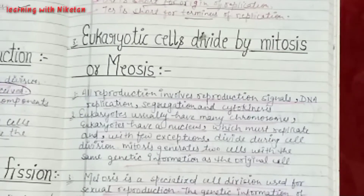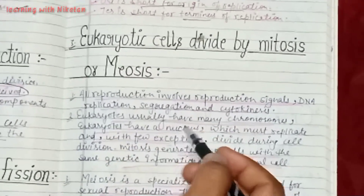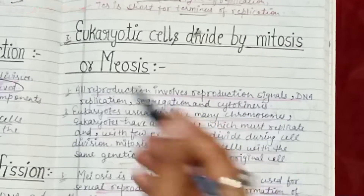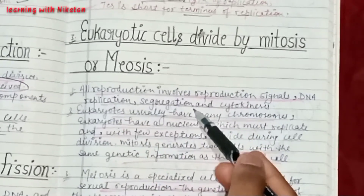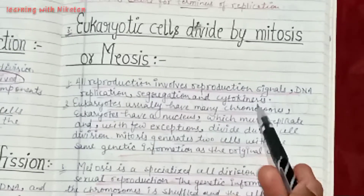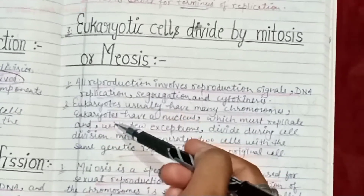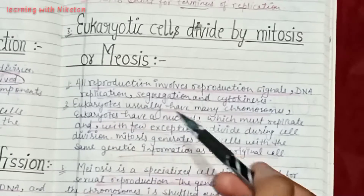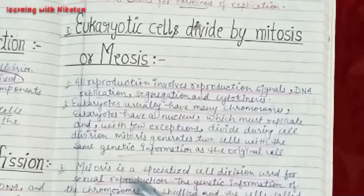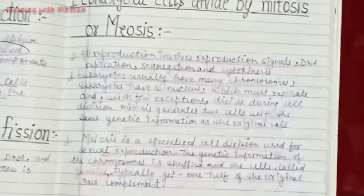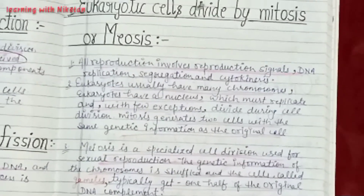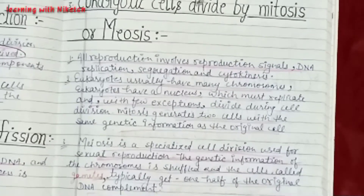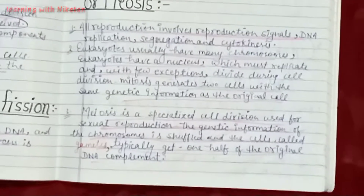The next point is eukaryotic cells divide by mitosis or meiosis. All reproduction involves reproduction signals, DNA replication, segregation, and cytokinesis. Eukaryotes usually have many chromosomes and have a nucleus which must replicate. With a few exceptions, the nucleus divides during cell division. Mitosis generates two cells with the same genetic information as the original cell.